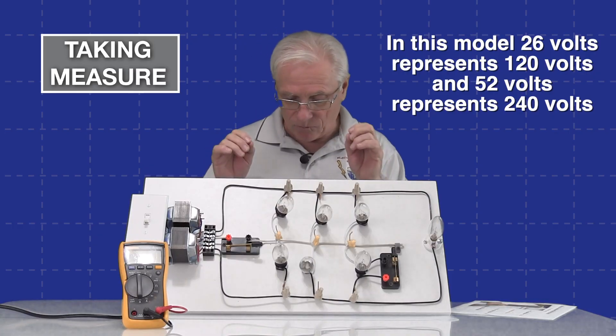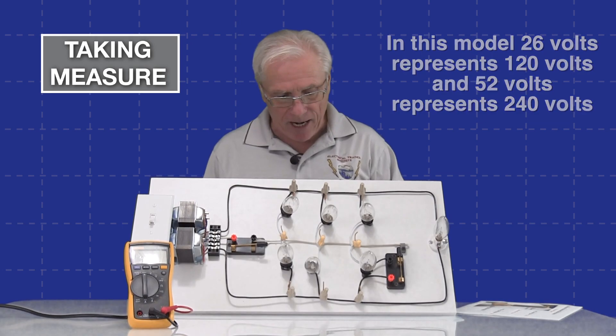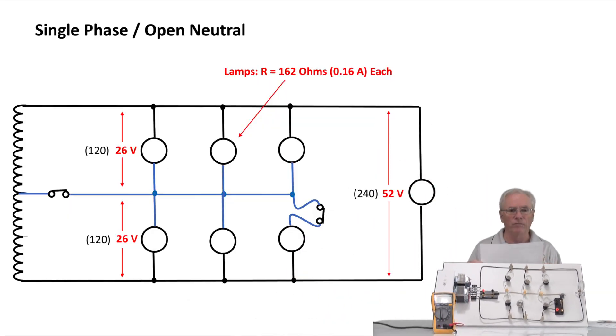In this case, we'll have 26 volts representing 120 volts and 52 volts representing 240 volts. On your screen the same drawing should pop up, and it's an equivalent of what we're looking at here.